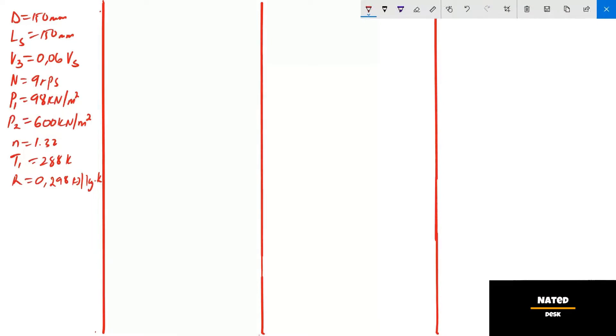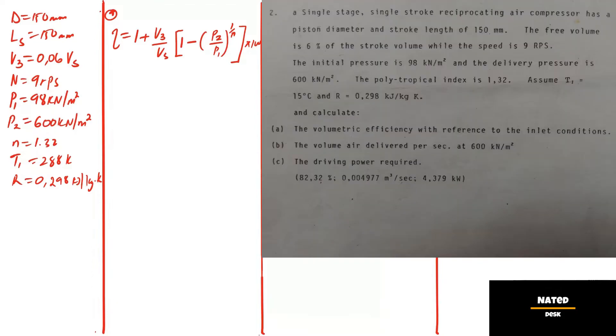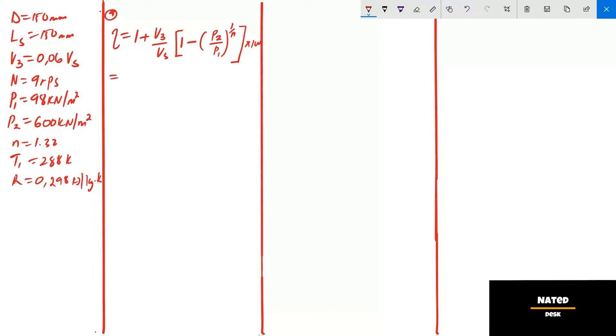Part A: The efficiency can be calculated with one of two formulas. We'll use the first one. The free volume V3 is given as 6% of the stroke volume Vs. So 1 plus, substitute as 6% of the stroke volume Vs times open square bracket, 1 minus open bracket.